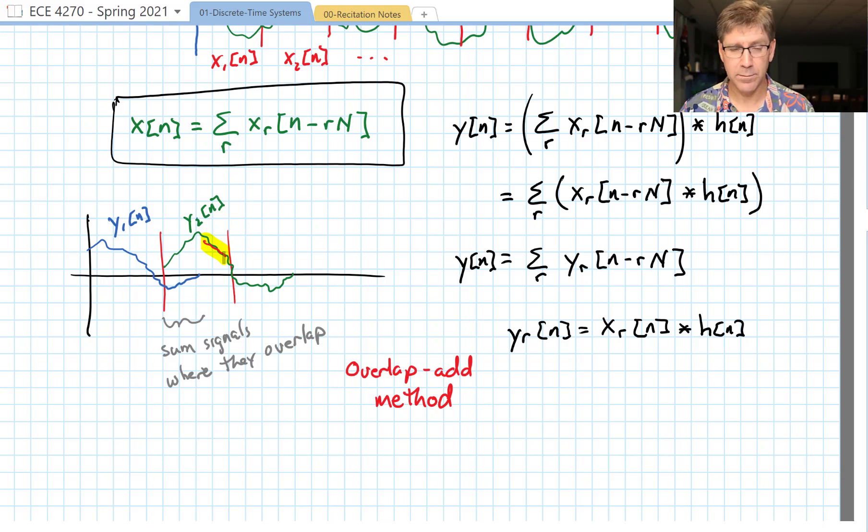This is the way that's used in many computer programs, especially if you're doing real-time processing. It's more efficient to process a block of data on your computer than to do it just a single sample at a time. And so they process it in blocks and construct the output by doing overlap and add.